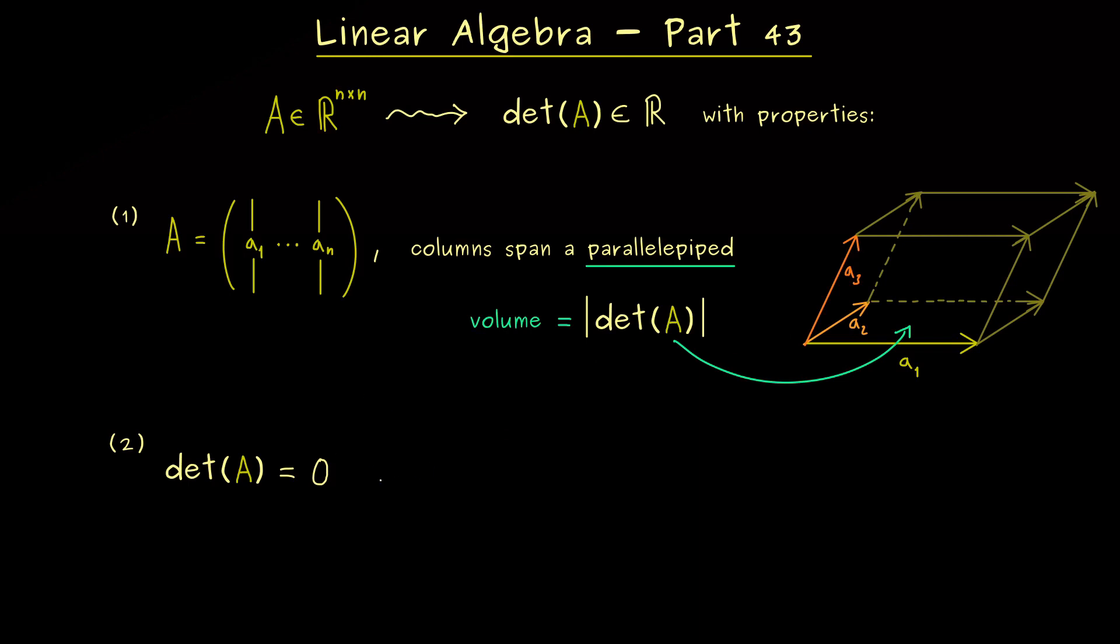Hence, we can immediately draw a very important conclusion. Namely, if the determinant is zero, the column vectors here are linearly dependent. Because otherwise, they would definitely span a non-vanishing volume. Therefore, we also see this is exactly if and only if.